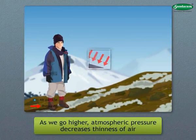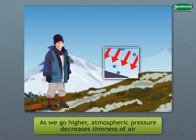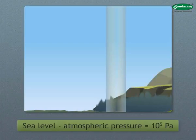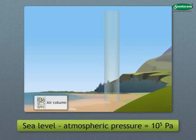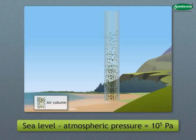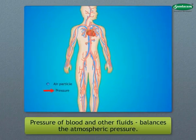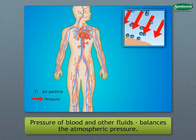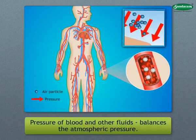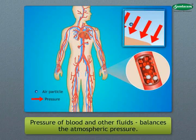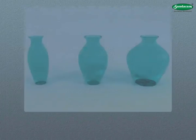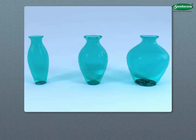The atmospheric pressure at a place depends on its height above sea level. As we go higher, atmospheric pressure decreases due to the thinness of air. At sea level on the Earth's surface, atmospheric pressure is about 10⁵ Pascal. Even though the pressure acting on you is so large, you don't feel it because the pressure of blood and other fluids in your body balances the atmospheric pressure.